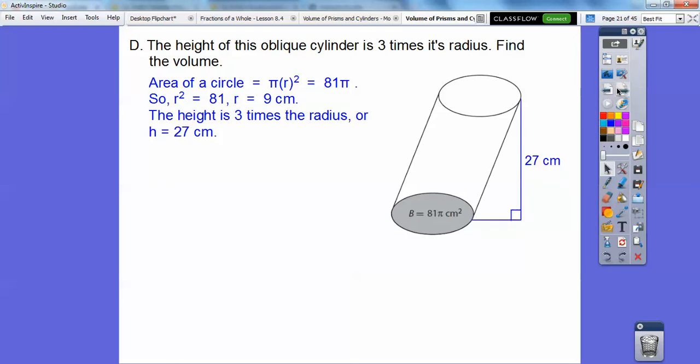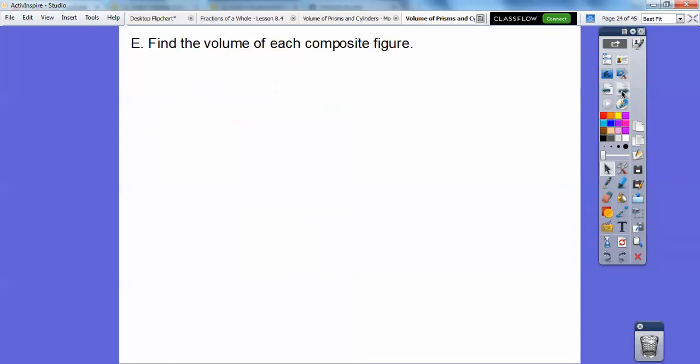So now the volume is the area of the base times the height, so we're just going to multiply 81π times the 27 right there, and we're going to get 2,187π. Don't forget the π. Don't forget the cube, or centimeters cubed. Approximately equal to, I just multiplied that by 3.14, and I got that decimal conversion right there. Which one's more accurate? Well, the one with the π is actually the most accurate right there. That's the exact answer.